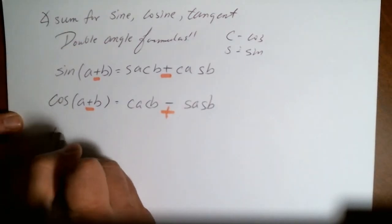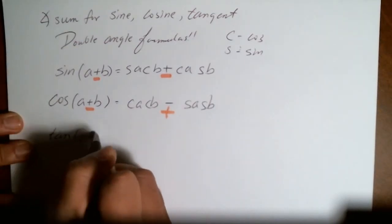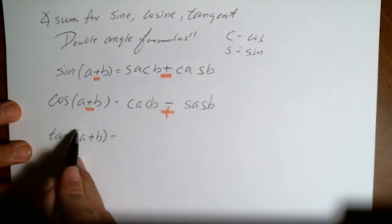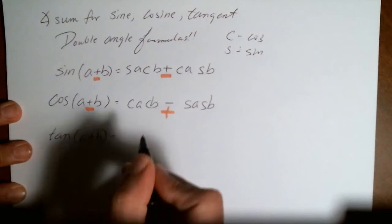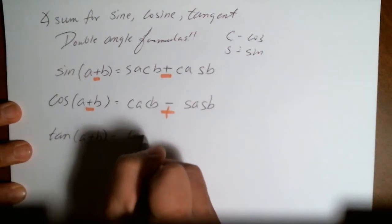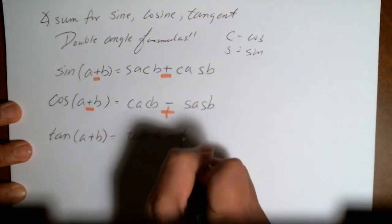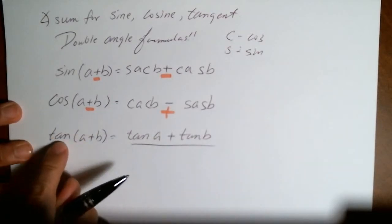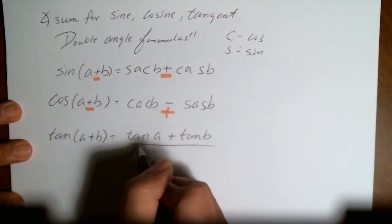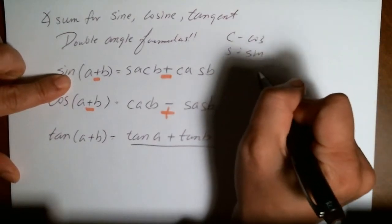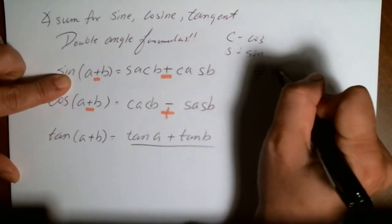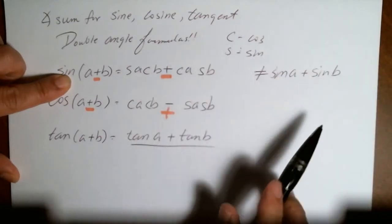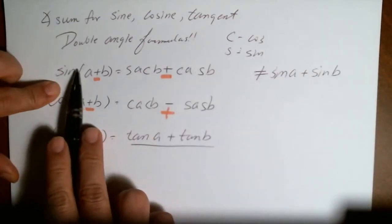How about the tangent of A plus B? How do you figure that out? Well, the way I like to remember this is just distribute that out in the numerator. So it becomes the tangent of A plus the tangent of B that goes in the numerator. By the way, the sine of A plus B does not equal the sine of A plus the sine of B.